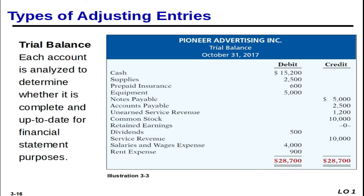As we talked about last time, sometimes these balances are not up to date because some of these accounts we did not make journal entries for throughout the period. Some of them expire with the passage of time, and journal entries cost money because somebody has to do them. Even if you're using a computer, sometimes we have millions of journal entries for minor things like supplies.